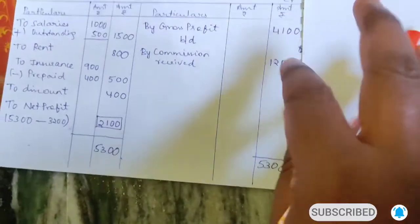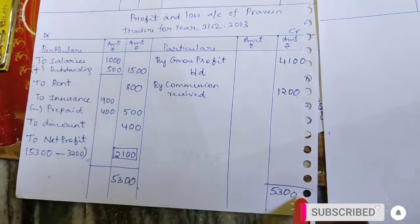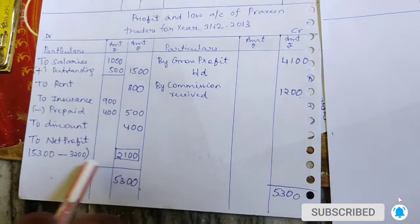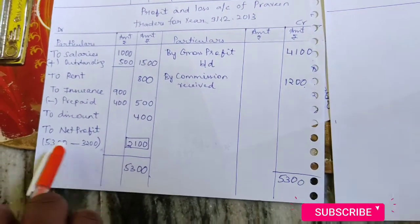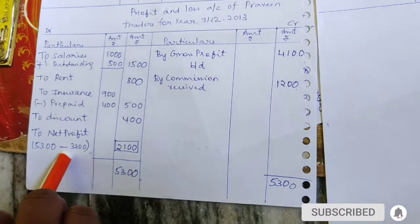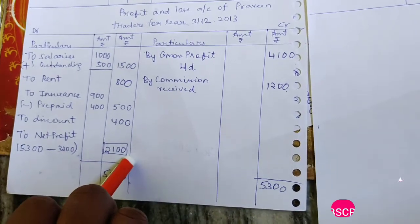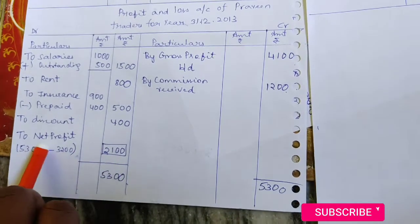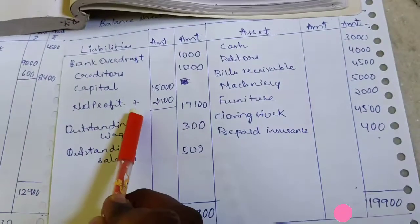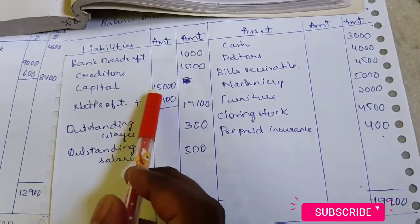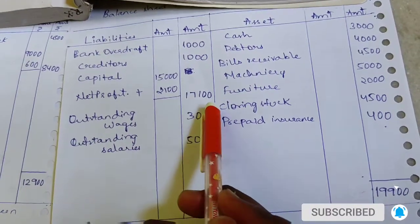Now the P&L account totals: credit side total is 5,300; debit side total is 3,200. So 5,300 minus 3,200 equals 2,100 — this is net profit. Net profit is added to capital: 15,000 plus 2,100 equals 17,100. If it were a net loss, we would subtract it — remember that.